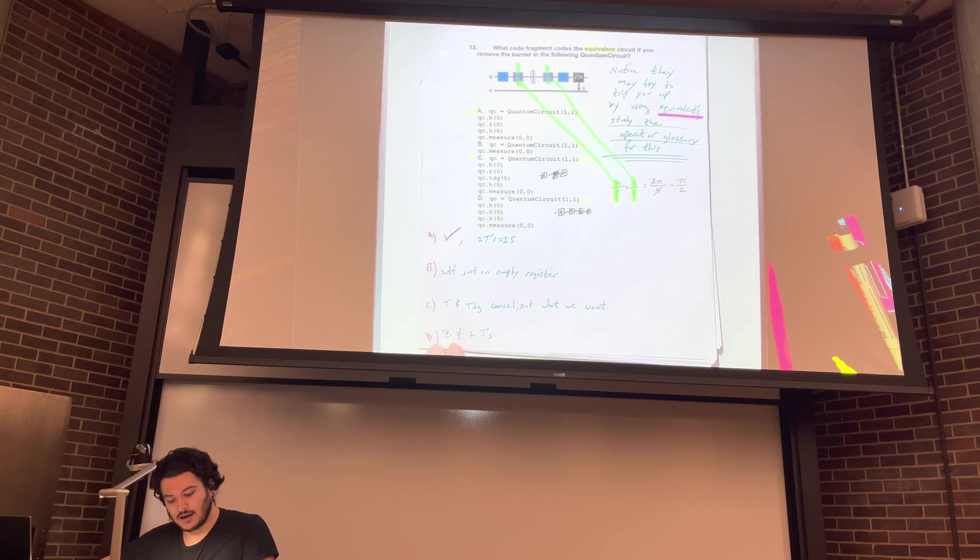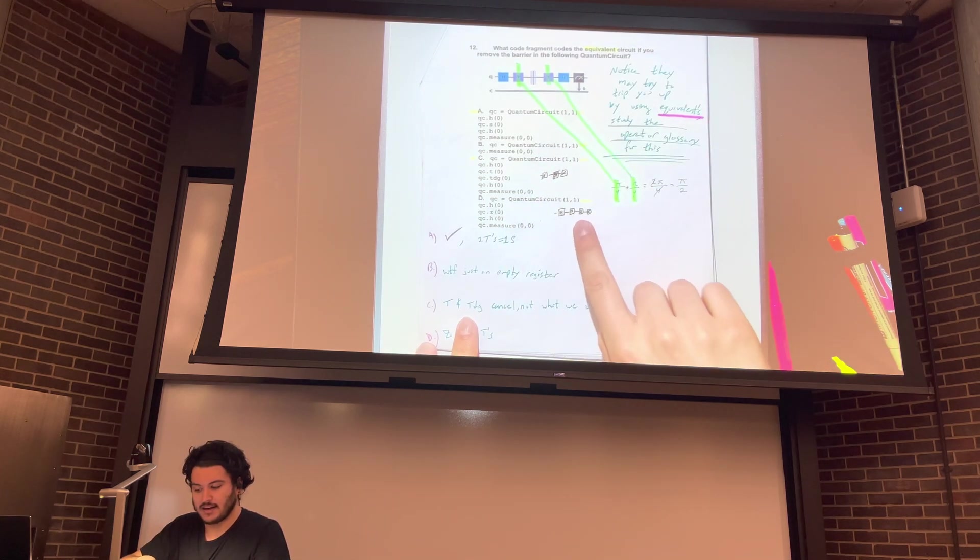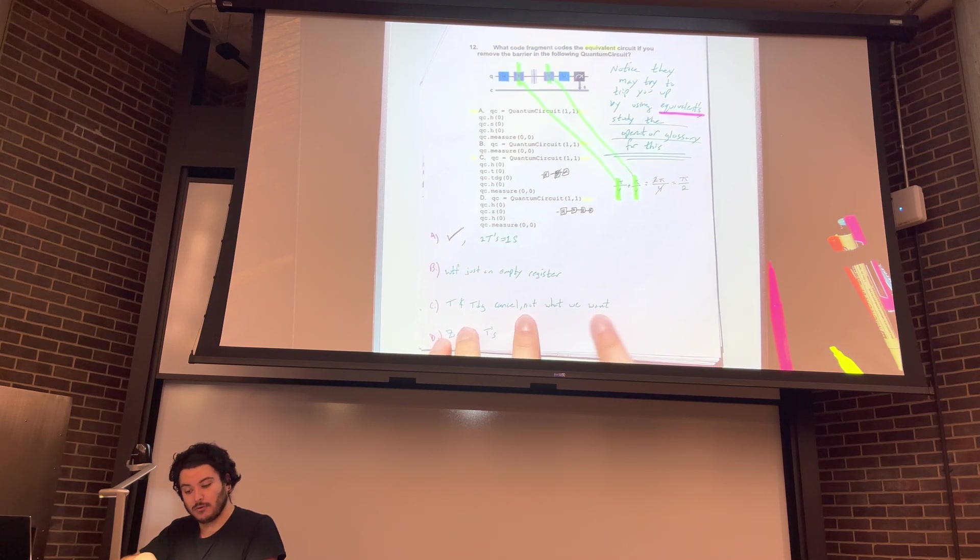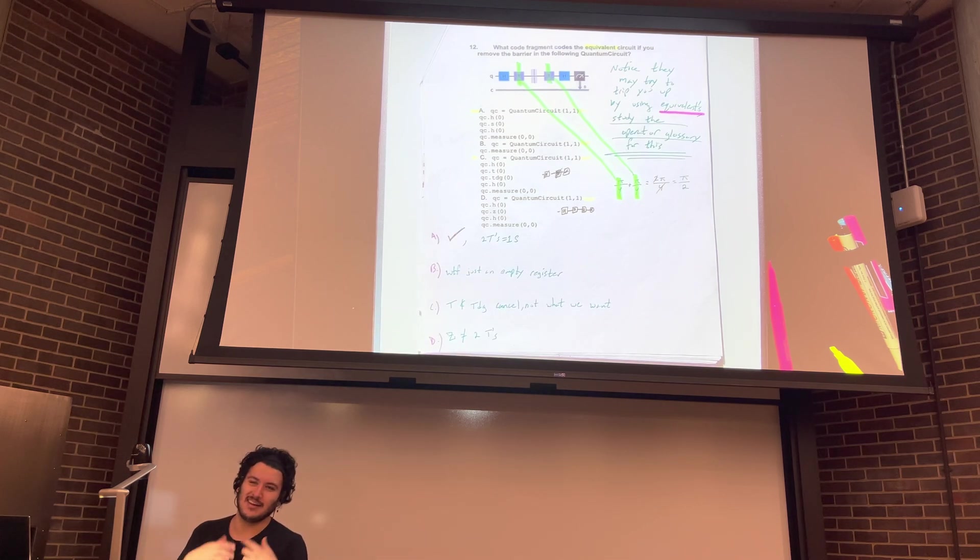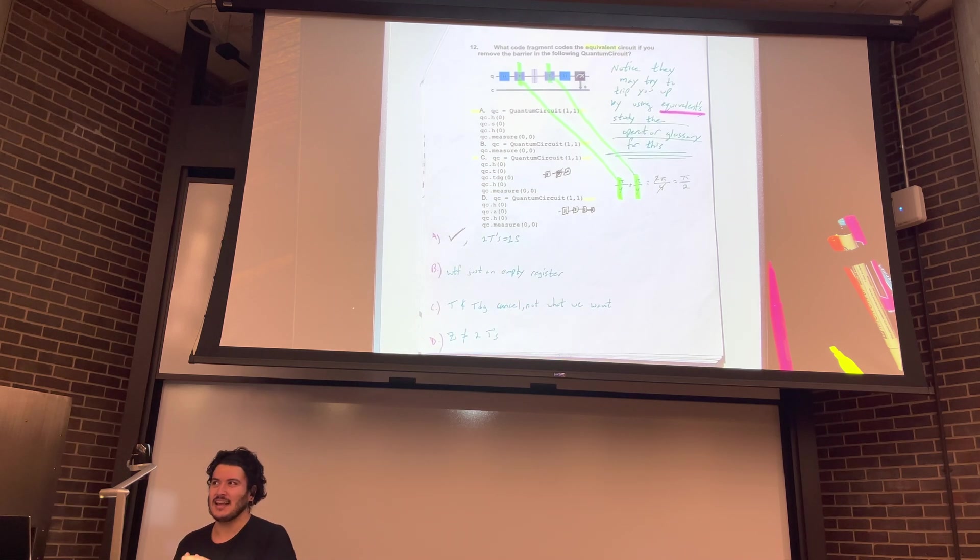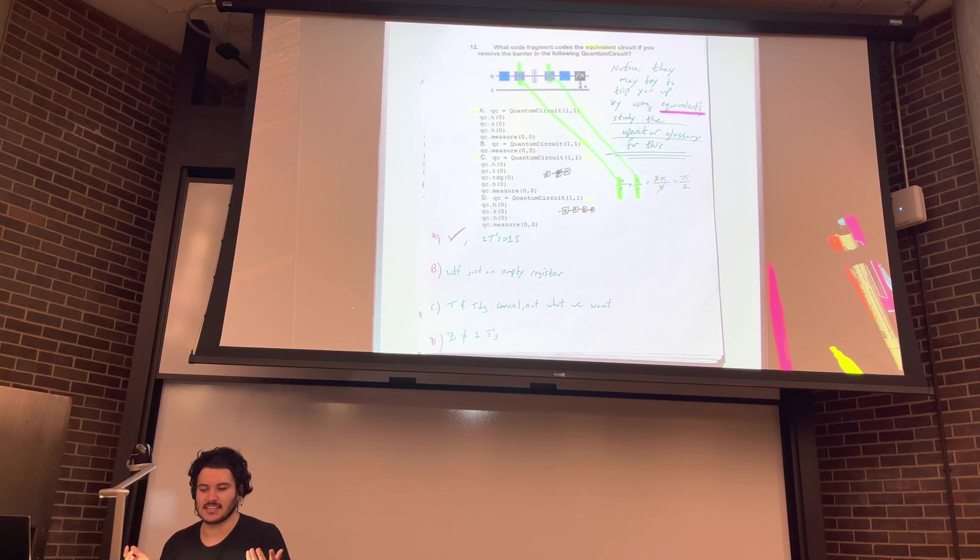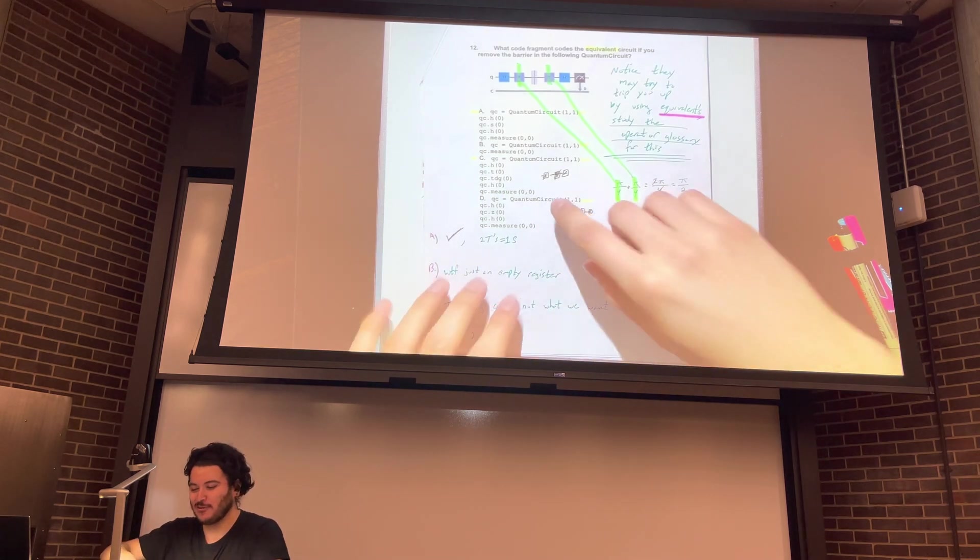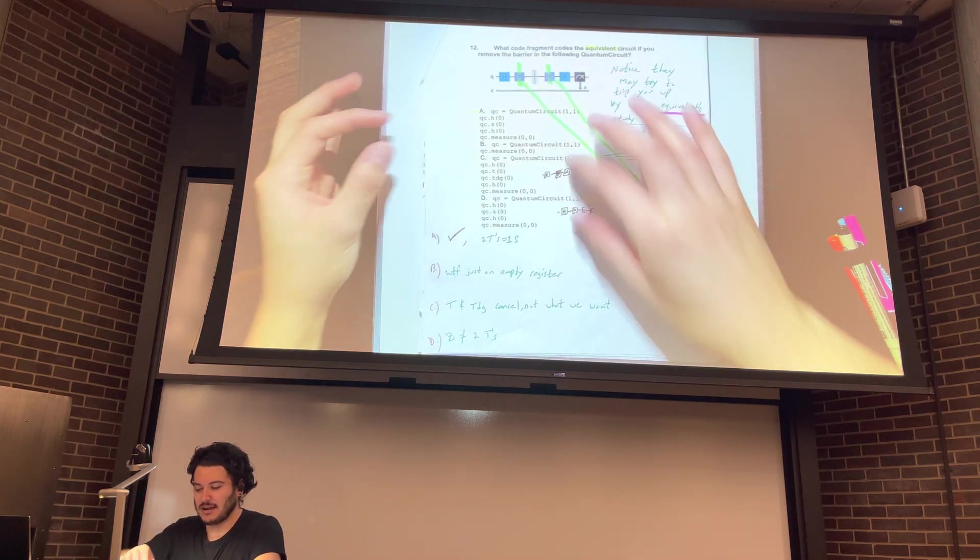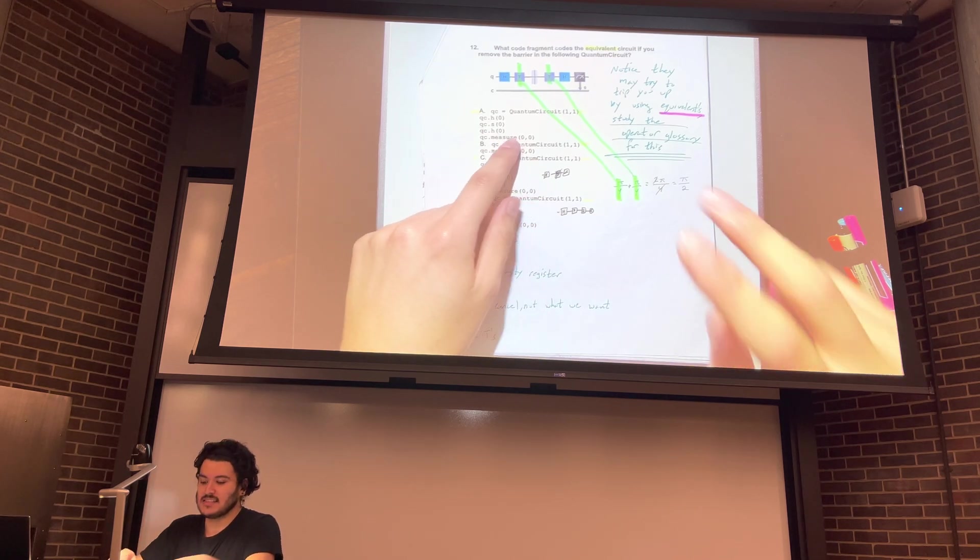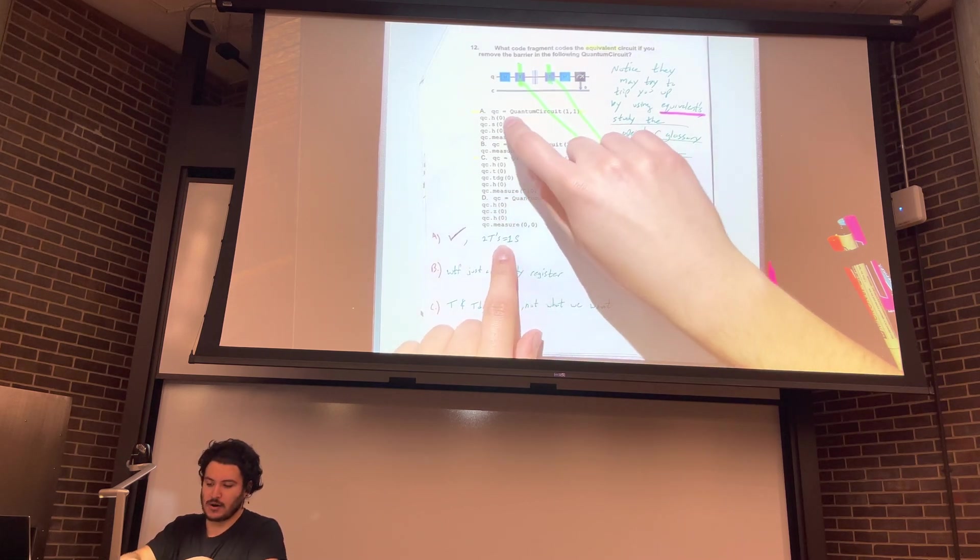So the rationale behind D being wrong is Z is not equal to two Ts. So yeah, we saw that. It's like, it's unrelated to what we want. The reason C is wrong is T and T dagger cancel, not what we want. Sorry, these are like my personal notes. So like, it's a whole empty register. And that's like, when I was first going through this, like, I didn't realize how there's more to these questions than meets the eye. Because, like, it has an answer. But then, you know, as you learn more, it's like, oh, these questions aren't as surface level as I thought at first. So I was like, you know, there's just an empty register, but it goes deeper than that. So then for A, we have a Hadamard, an S gate, a Hadamard, and then a measure. And we saw that two Ts simplify to one S. And that is why A is correct.